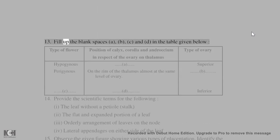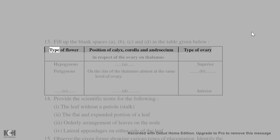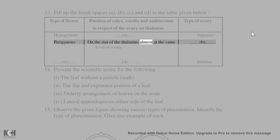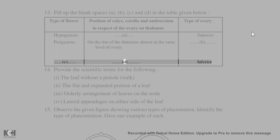13. Fill up the blank spaces A, B, C, and D in the table: type of flower / position of calyx, corolla, and androecium / type of ovary. Hypogynous: floral parts below the ovary — A (superior). Perigynous: on the rim of the thalamus, almost at the same level as the ovary — B (half inferior). C (epigynous) — D (inferior).